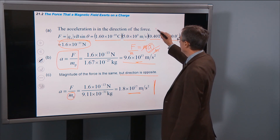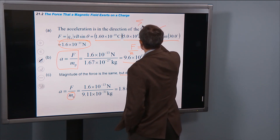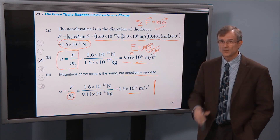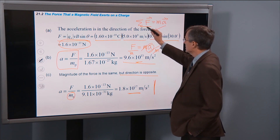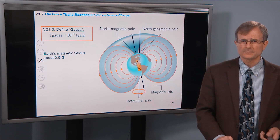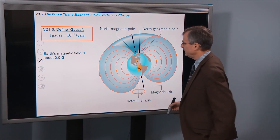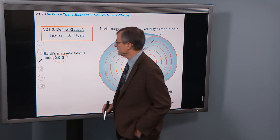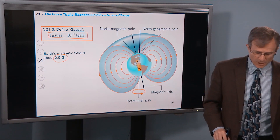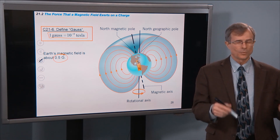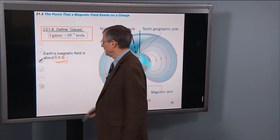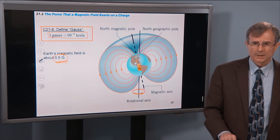The acceleration is in the direction of the force — we know that because the sum of forces equals mass times acceleration, Newton's second law. With only one force acting, the force direction must equal the acceleration direction. A Gauss is defined as 10⁻⁴ Tesla — one ten-thousandth of a Tesla. The Earth's magnetic field is about half a Gauss — not very strong, but definitely strong enough to push compass needles around.